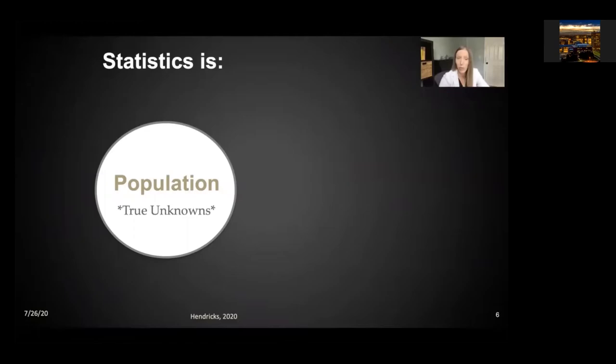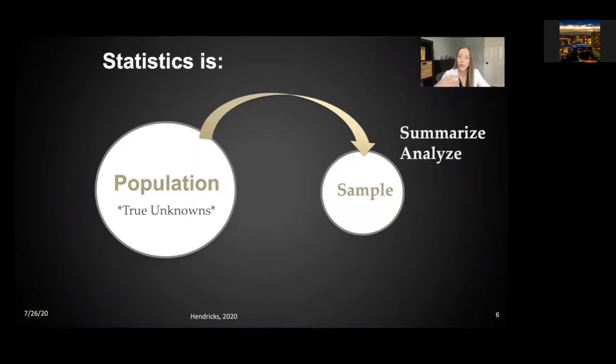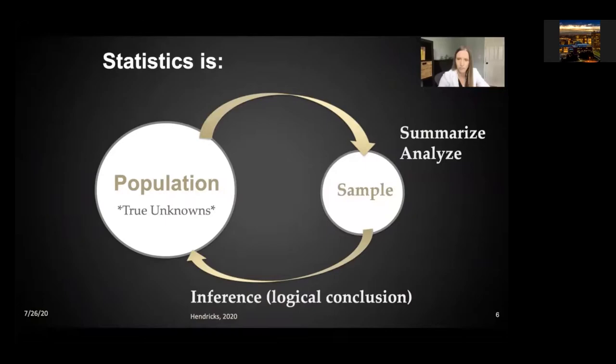We can't possibly study everybody in the world. So instead we take a sample from a population and we do something to that sample — we summarize the sample, we analyze it, we look into it in detail. But the real purpose of statistics is to try to make an inference or a logical conclusion back to this overall general population. An inference is a logical conclusion, and when we make this in statistics, we can even quantify the uncertainty of our inference. The way we collect our data is very important and will influence what kind of logical conclusions we can make about the population using our particular sample.